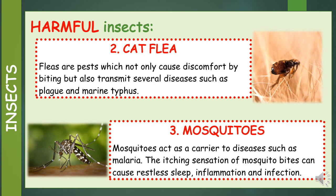Number 3: Mosquitoes. Mosquitoes act as a carrier to diseases such as malaria. The itching sensation of mosquito bites can cause restless sleep, inflammation and infection.